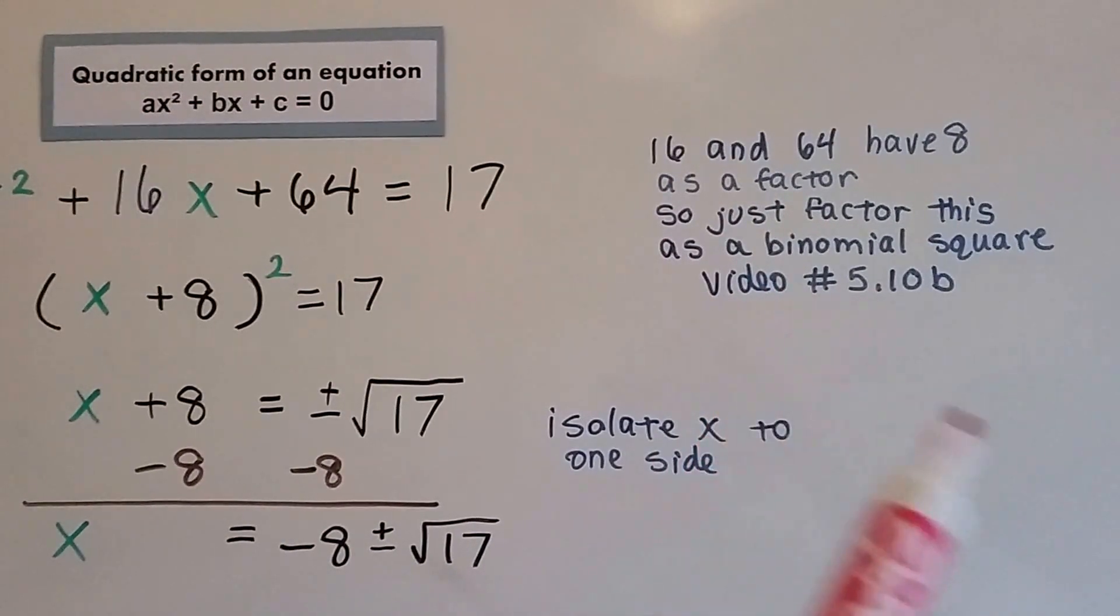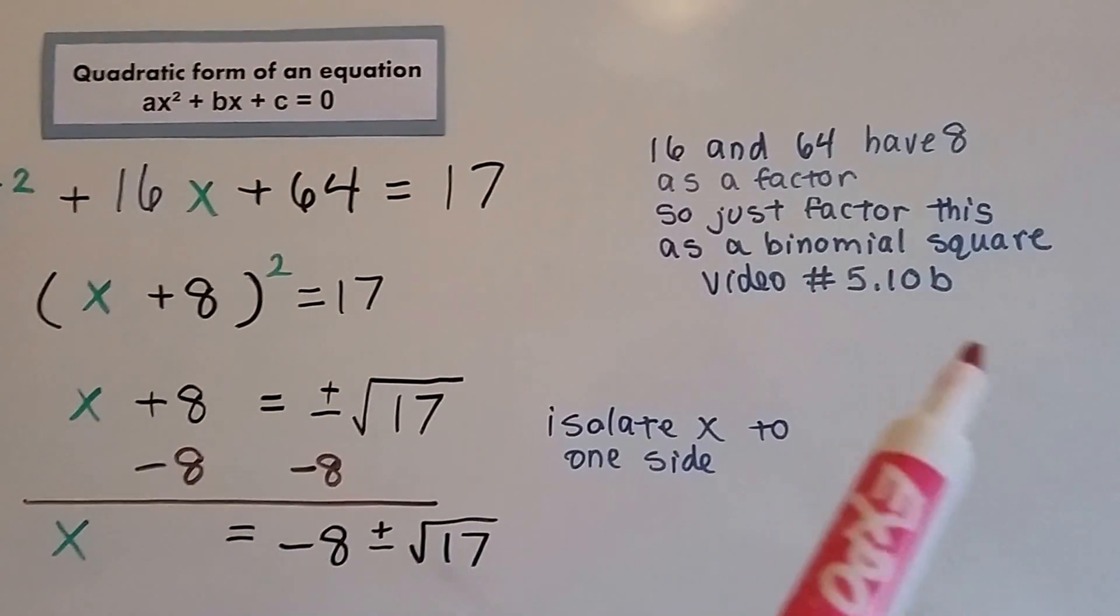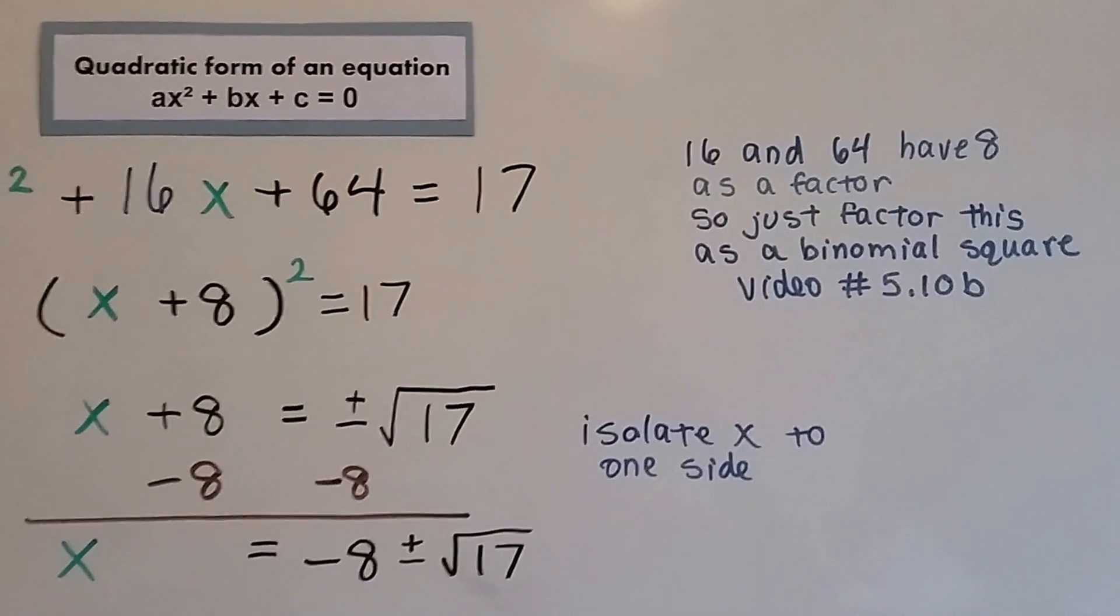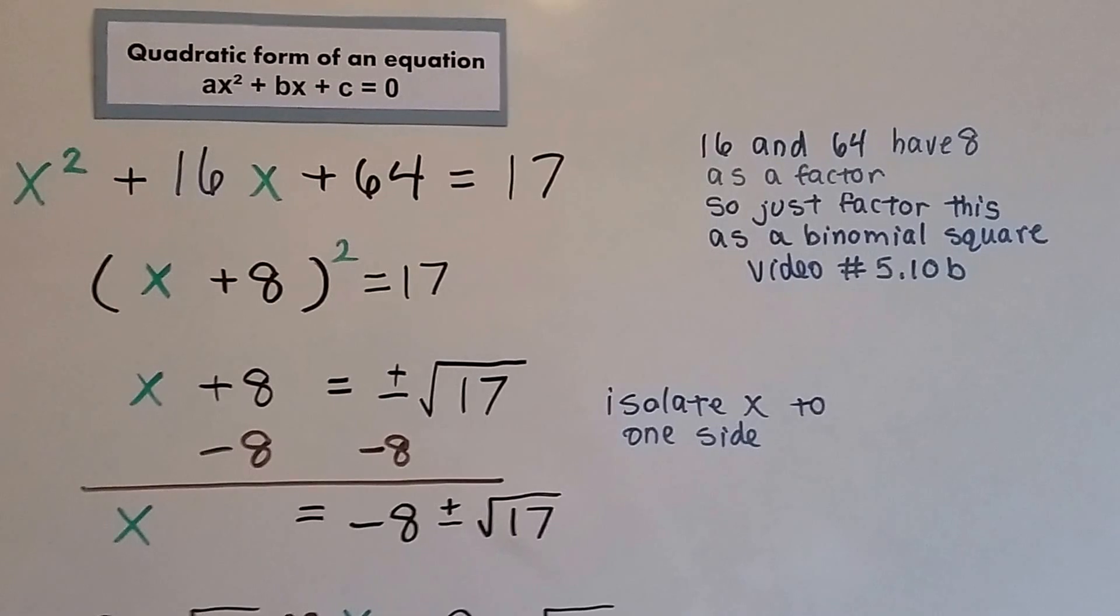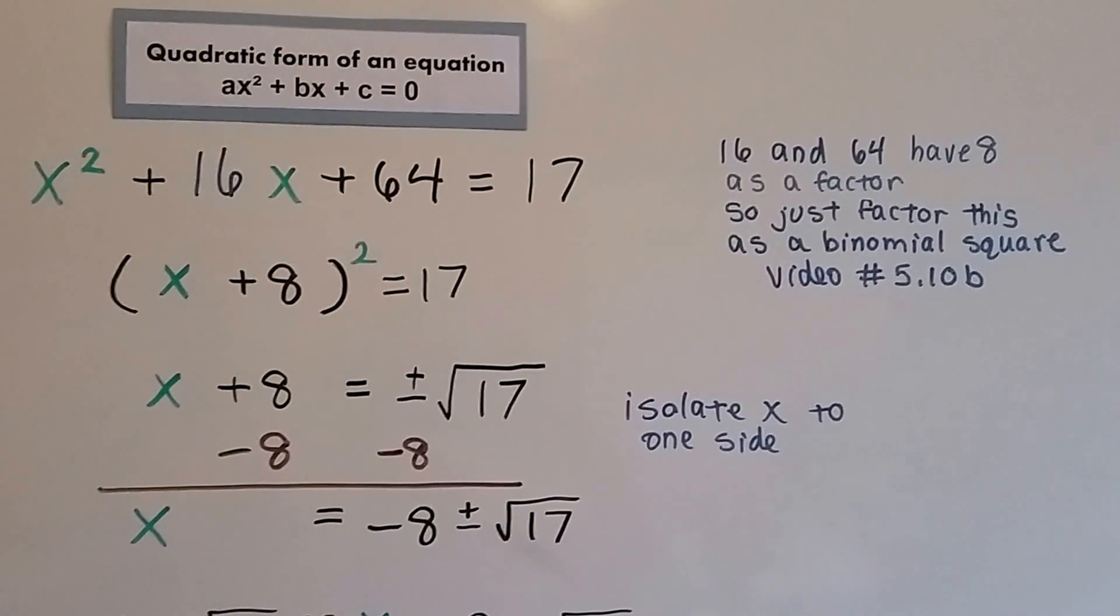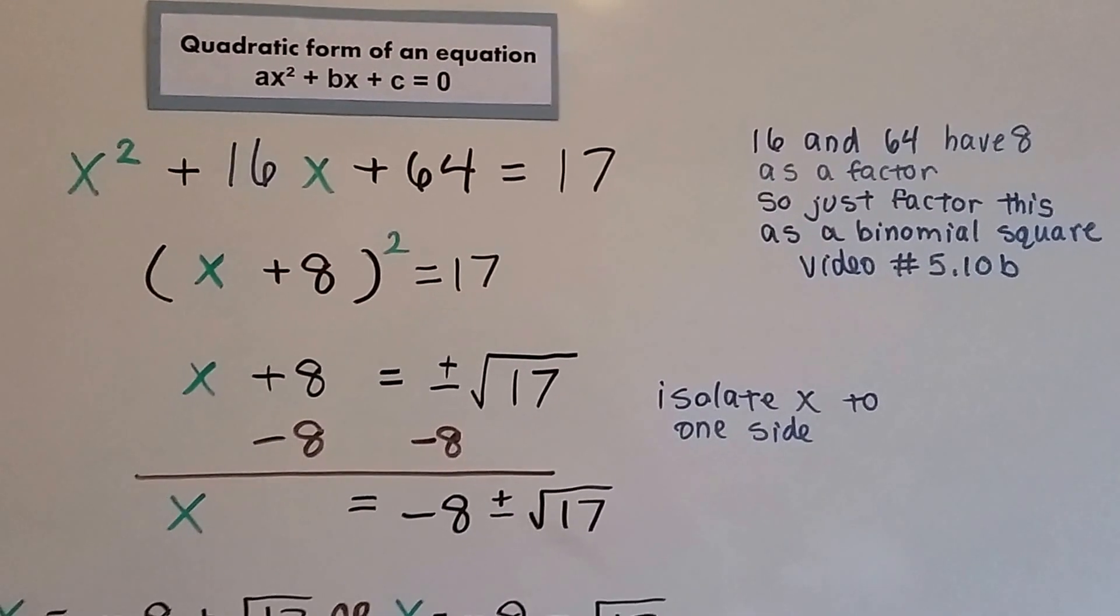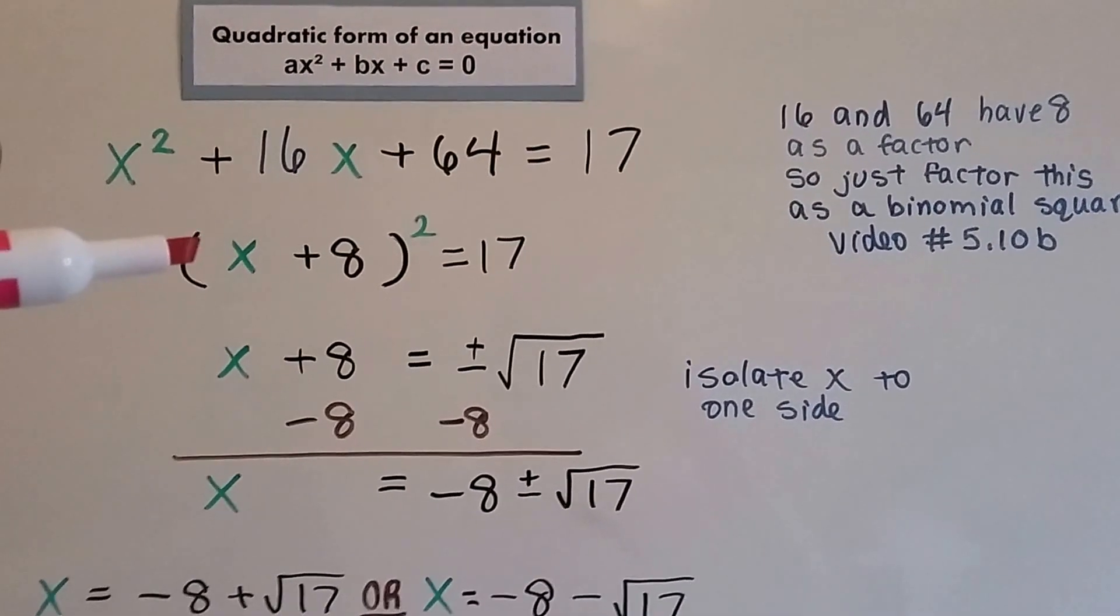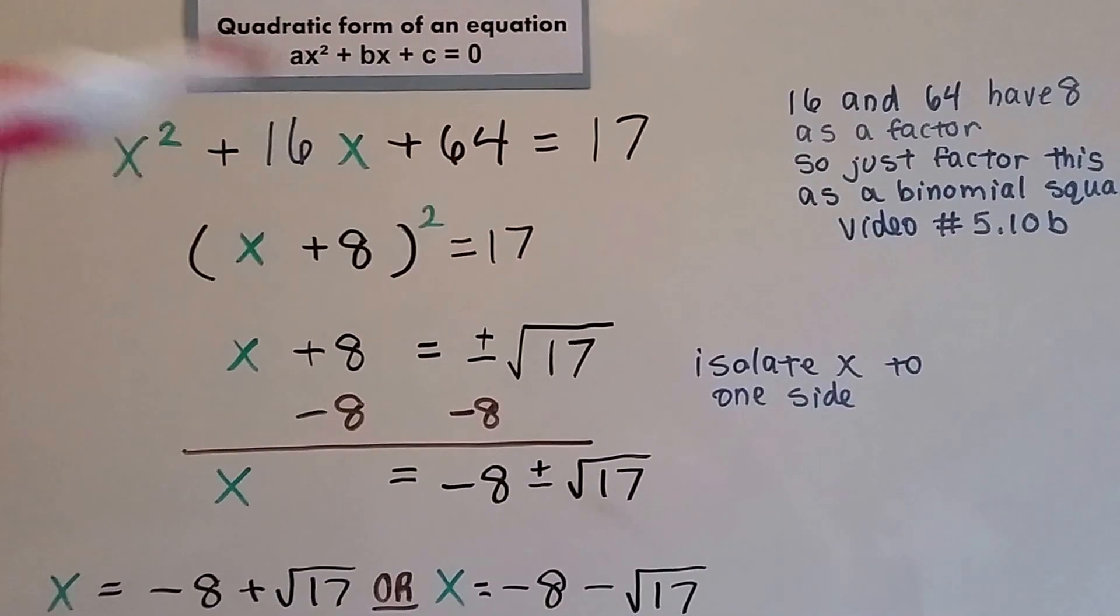And if you don't know what this is at all, then you've gotten way in deeper by many chapters, deeper than you should be. And you need to go back and find out where in the playlist for Algebra 1 that you need to start and move forward from there. So, we can factor this as a binomial square. And we get x plus 8 squared equals 17.